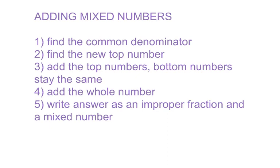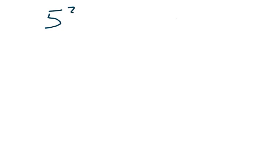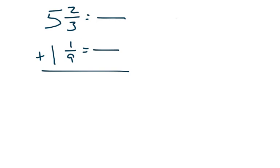Okay, so adding mixed numbers. Basically, if you can add a fraction, you can add a mixed number. The only difference is step four, where you're going to add the whole number — you're going to keep them separate. So if I had five and two-thirds plus one and one-ninth, you're going to follow the exact same process and add the whole number at the end. I have a three and a nine, so I'm going to use nine as my bottom number because that is the least common.